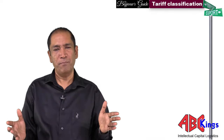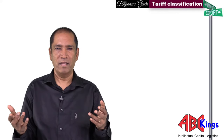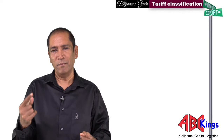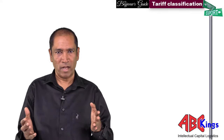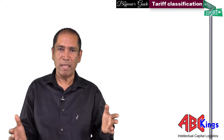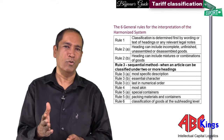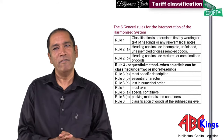You can import or export anything you can dream or imagine. Because it's not possible to have a code for every single item, classifiers have placed all products into 97 chapters and formulated six rules that people use to find the right chapter and heading for their goods.